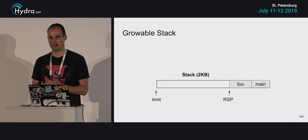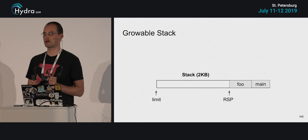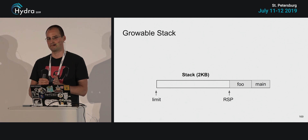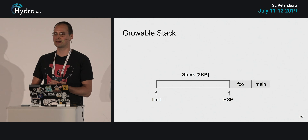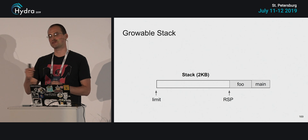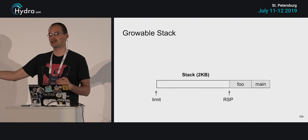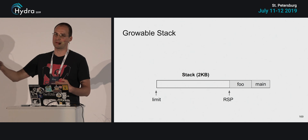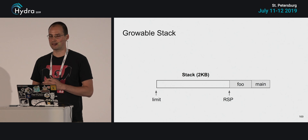We have a couple of minutes for questions. Question: regarding growable stacks, the split stack idea covers shrinking, but how do you shrink a growable stack? Answer: We can still shrink them, we just don't do it immediately when returning from the function. We shrink them during GC cycles — during GC we scan all stacks, check their sizes, and if a stack is too large relative to its used space, we incrementally shrink it.